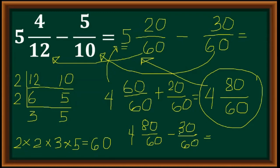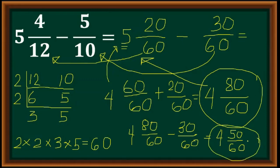Since the subtrahend doesn't have a whole number, we copy the whole number. Then 80 minus 30 is 50, over 60 — copy the denominator. Is this our final answer? Not yet, because we need to simplify 50 over 60.